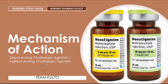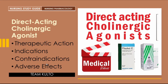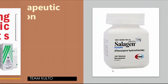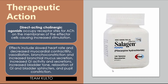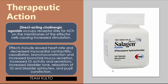Next up is mechanism of action. Direct acting cholinergic agonists occupy receptor sites for ACH on the membranes of effector cells, causing increased stimulation. Effects include slowed heart rate and decreased myocardial contractility, vasodilation, bronchoconstriction, increased bronchial mucus secretion, increased GI activity and secretions, increased bladder tone, relaxation of GI and bladder sphincters, and pupil constriction.